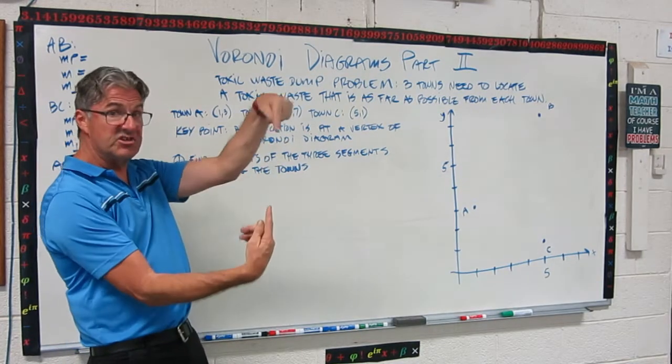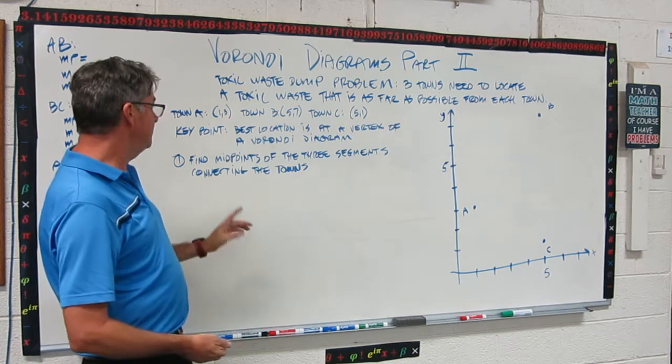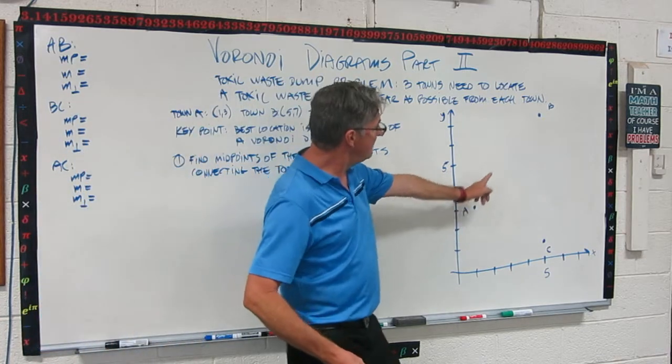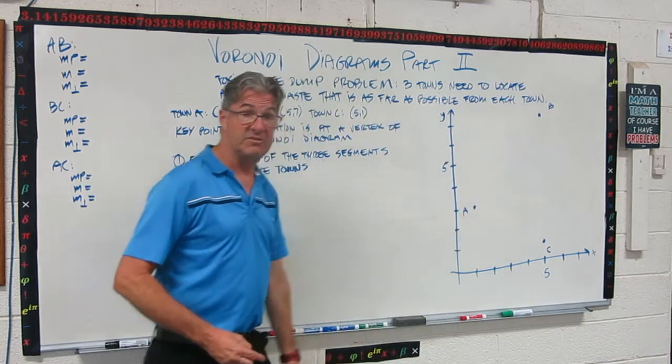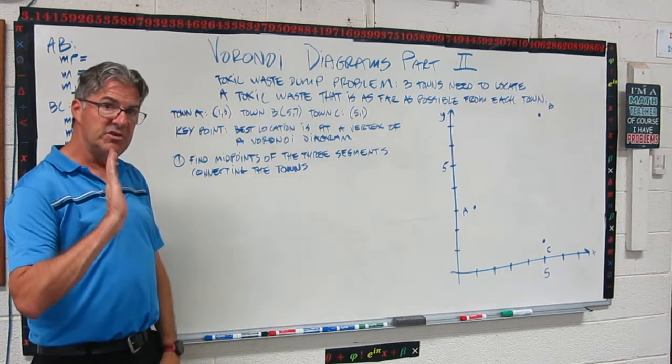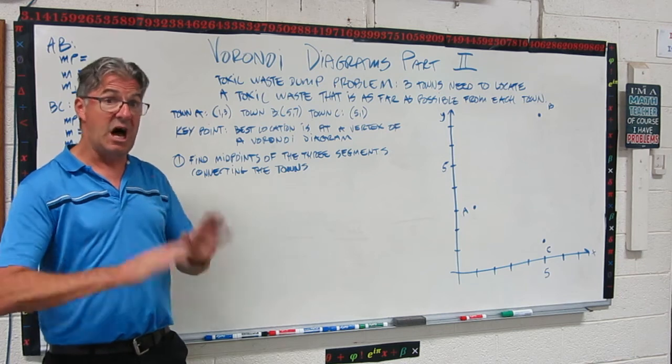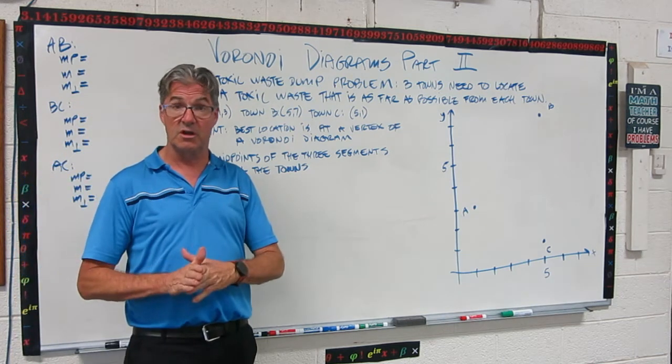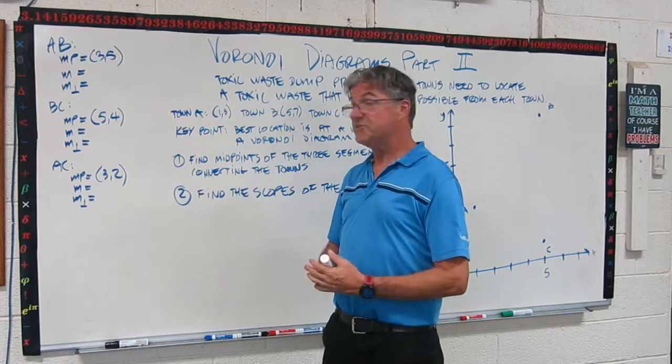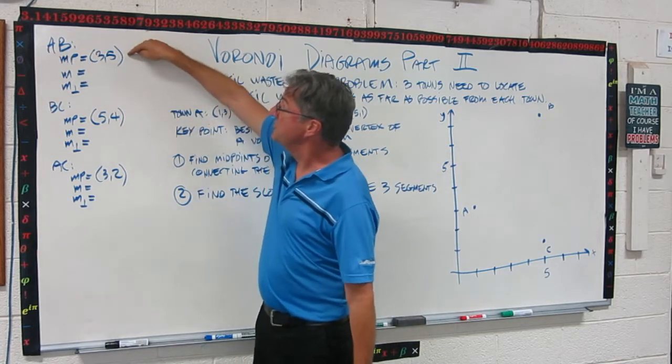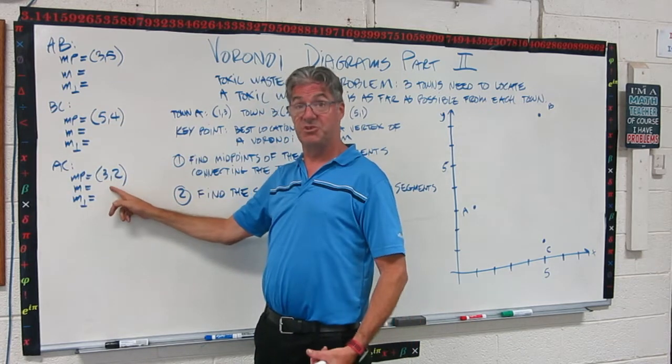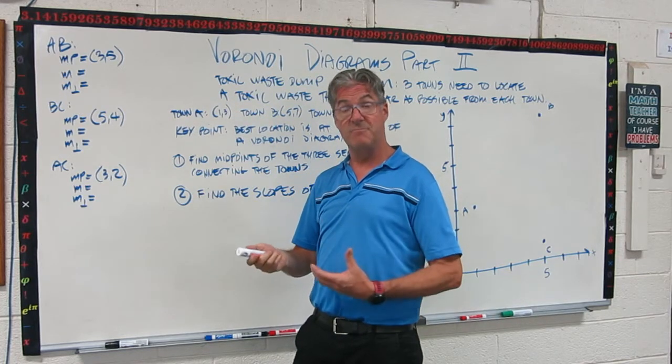When we did that other three region Voronoi diagram, it had an intersection where all three boundaries met. That's where we put the toxic waste dump. So the first step is to find the midpoints of the segments that connect the three towns. So you have all the coordinates on the graph. What I want you to do is pause the video and find those midpoints. I'm not going to do the calculation to keep the video short, but you can do it and I'll put the results up in a second. So pause the video and do that calculation. Here's the results. The midpoint of segment AB is (3,5), of segment BC is (5,4), and segment AC is (3,2).